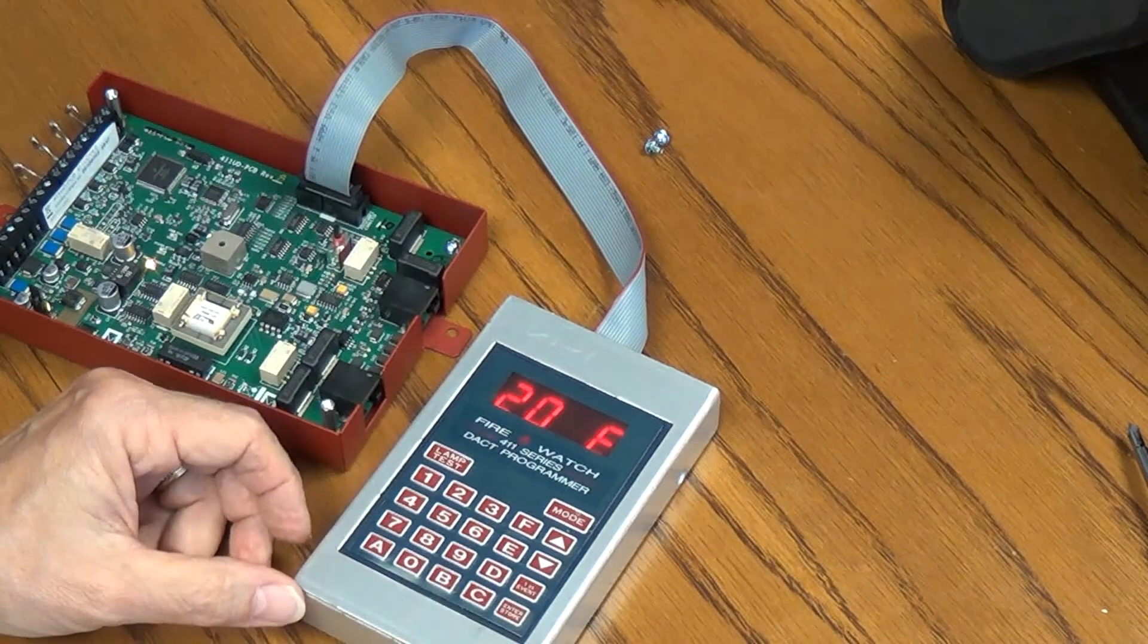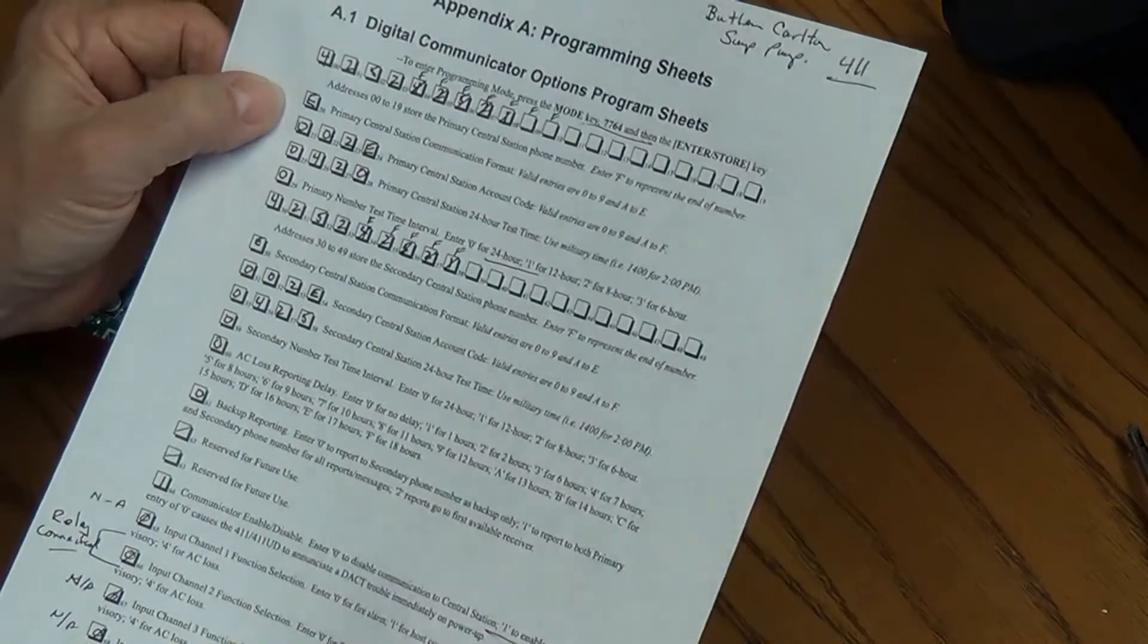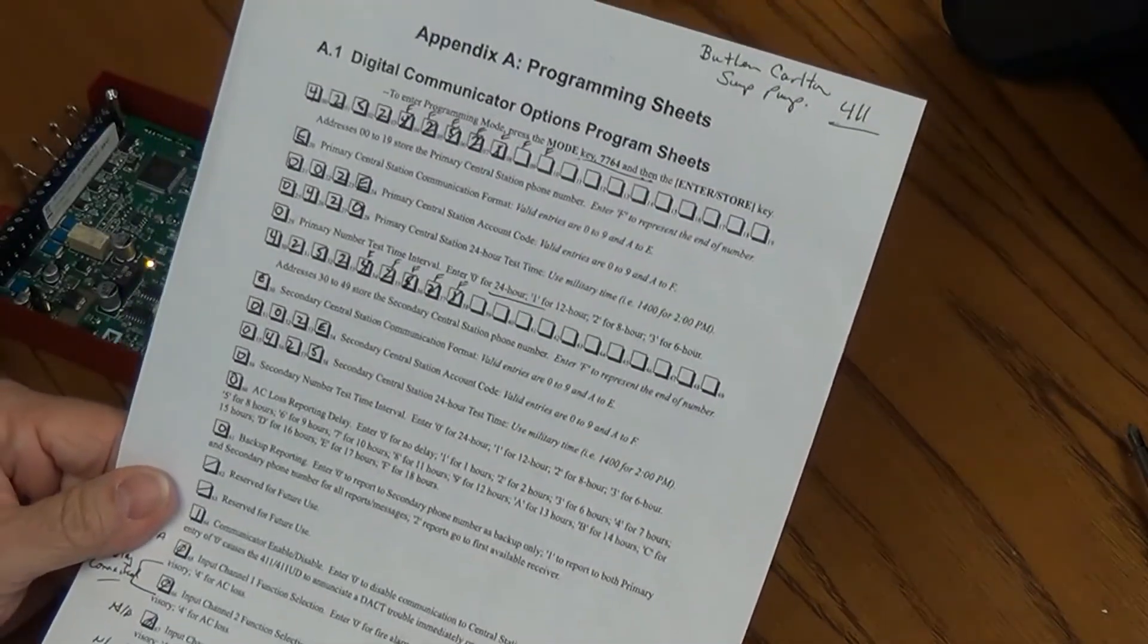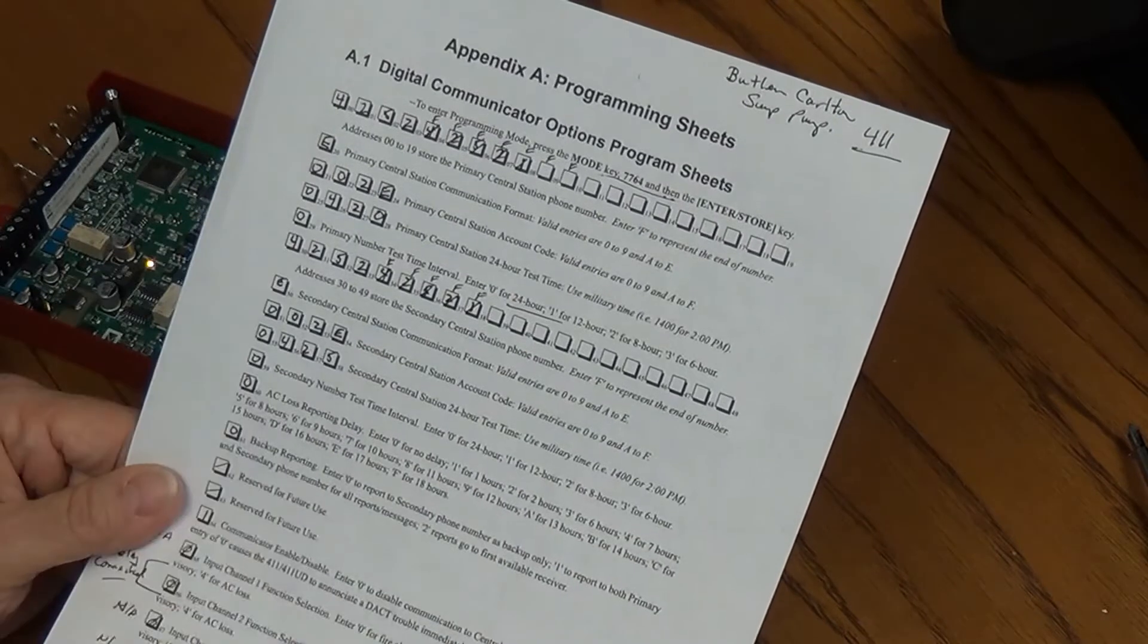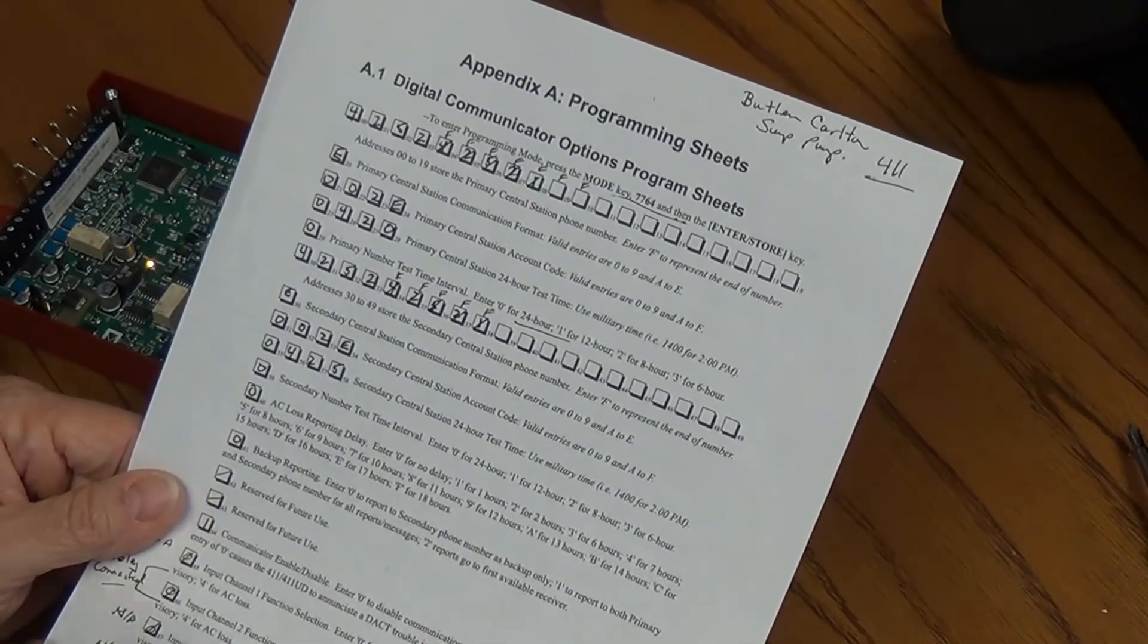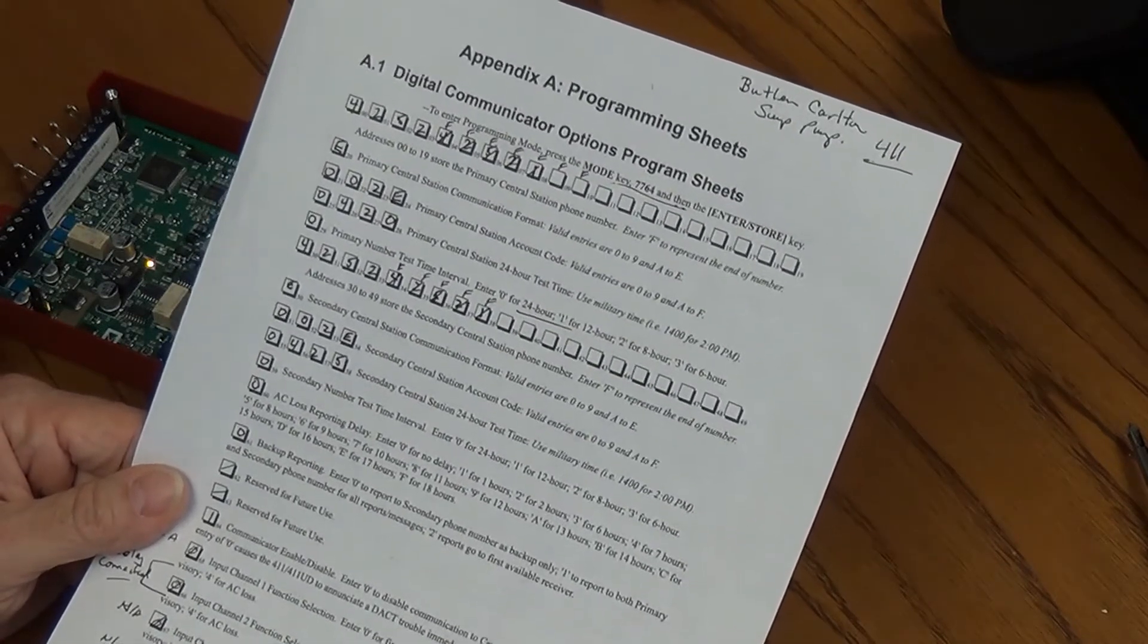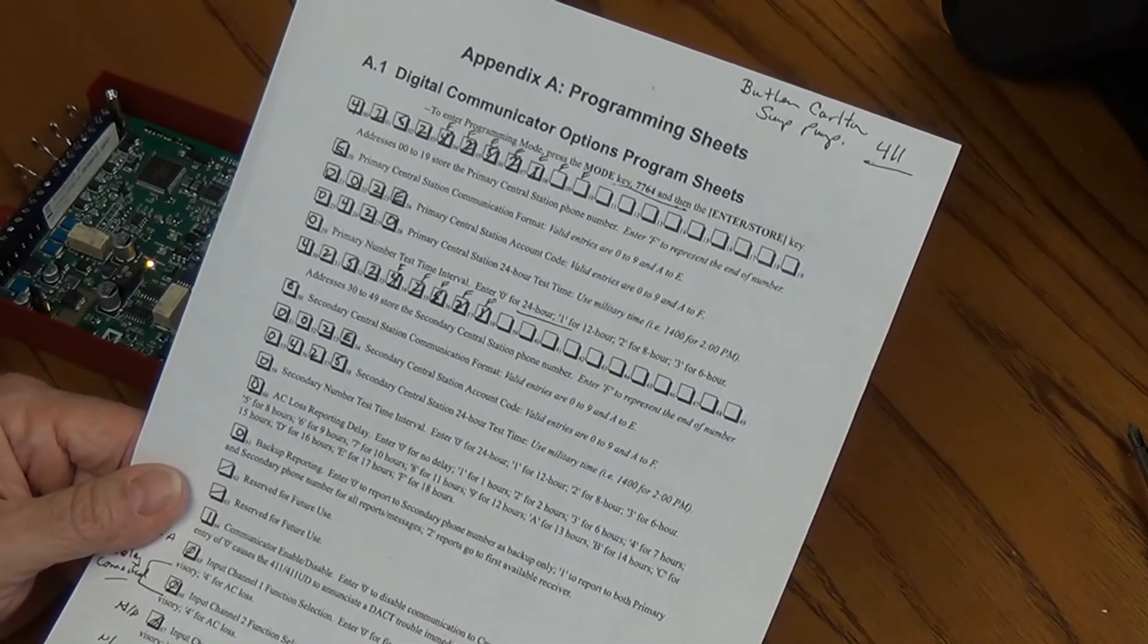Here we are in slot 20 now. Slot 20 is E, and that's what we're going to leave it as. That's the primary central station communication format. E for us is what we use, that's the Ademco alarm. And the next 4 after this is going to be our account. Let's say we're going to program this for alarm 2E. That's building 2, and that's our sump pump alarm is 2E. So we're going to enter in 002E. We're going to put those leading zeros in because we have four slots to fill.